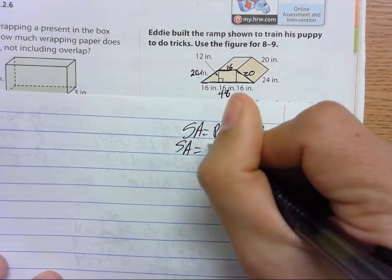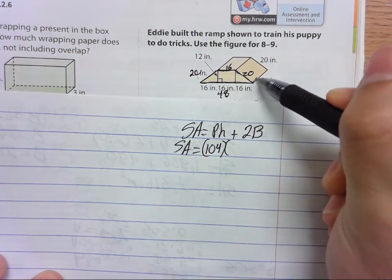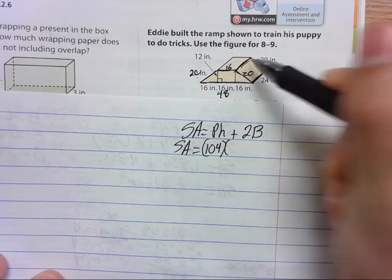Now the height of the prism—how far back does it go? It goes back 24 inches.